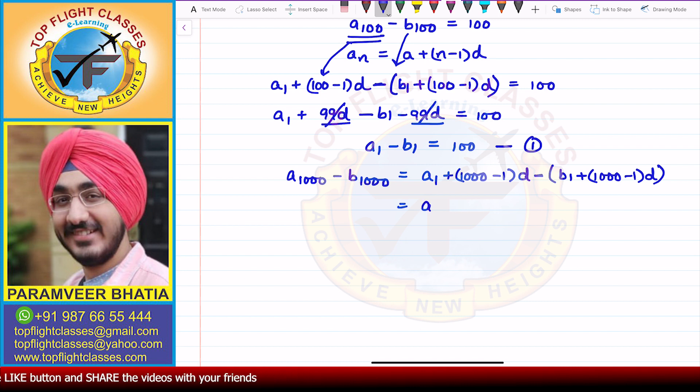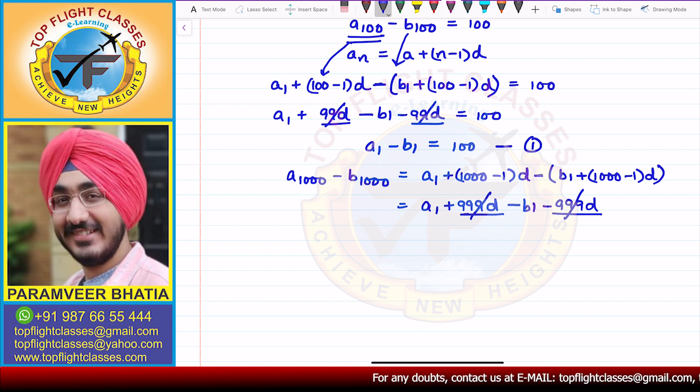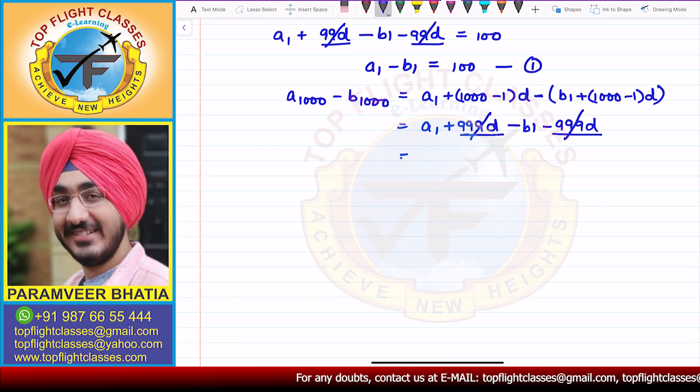So this will be equal to A1 plus 999D minus B1 minus (1000 minus 1) is 999 times D. Now 999D here as well, 999D here as well. So this will get cancelled because again, common difference is the same. So from here, this will be equal to A1 minus B1.